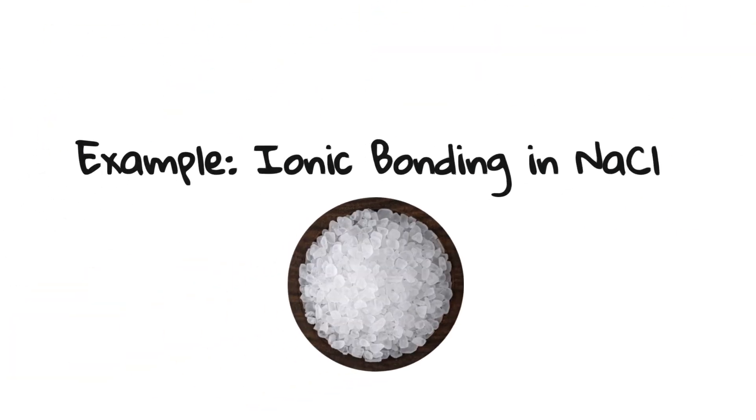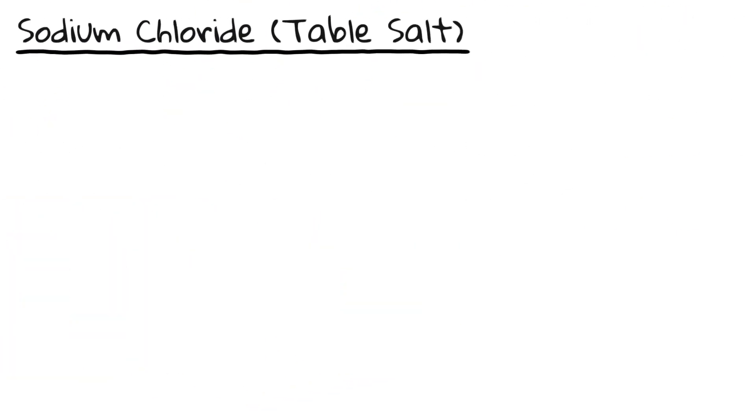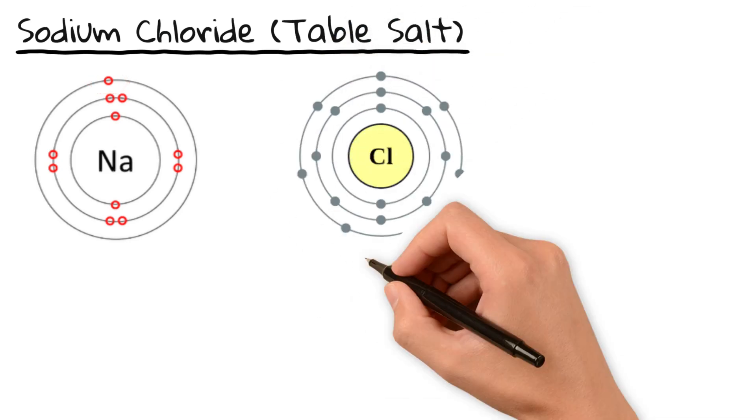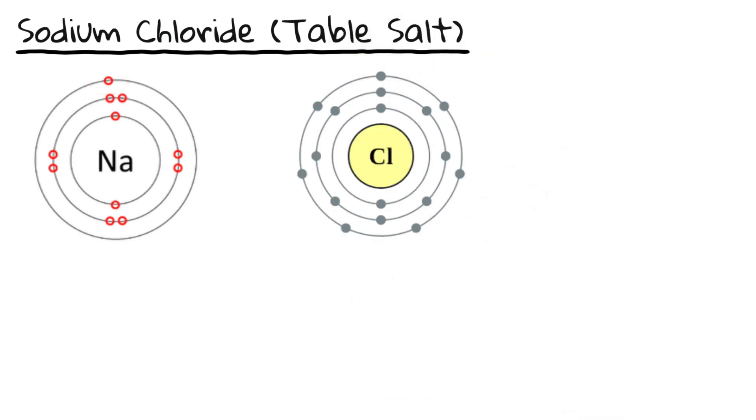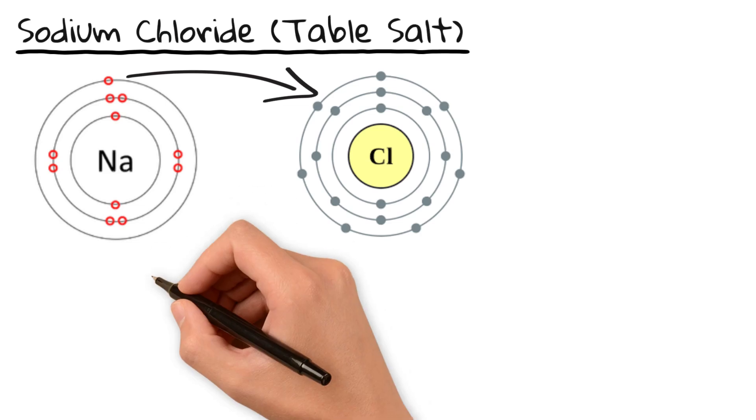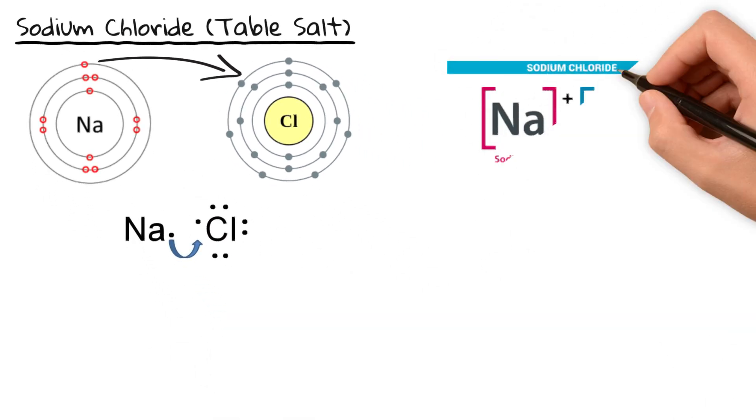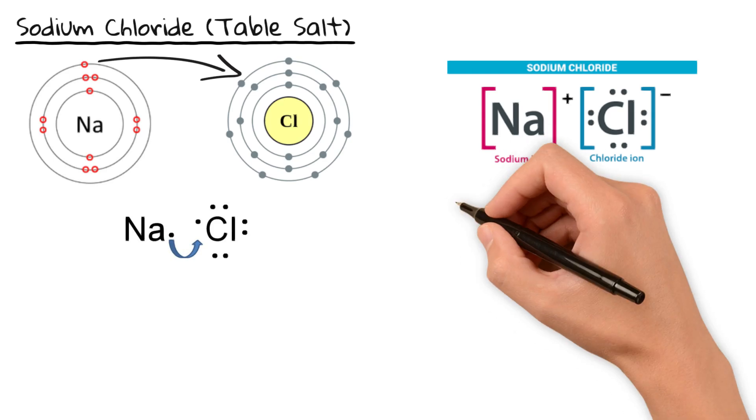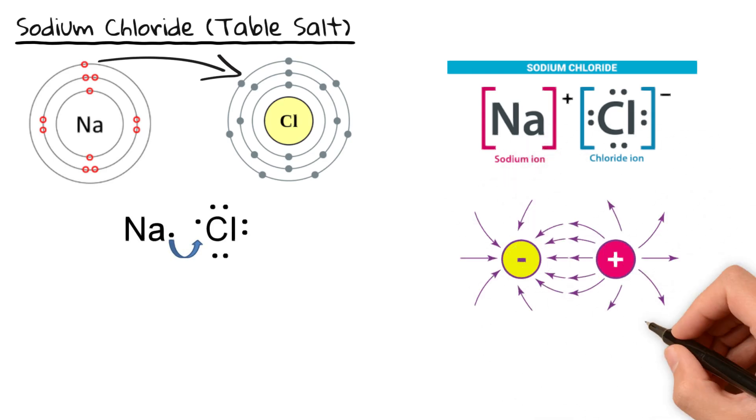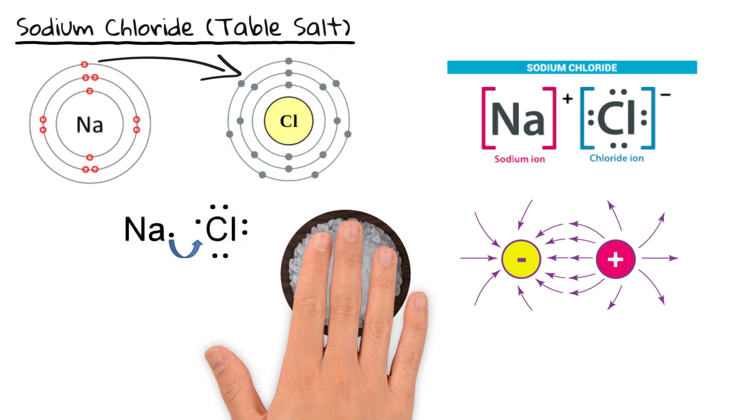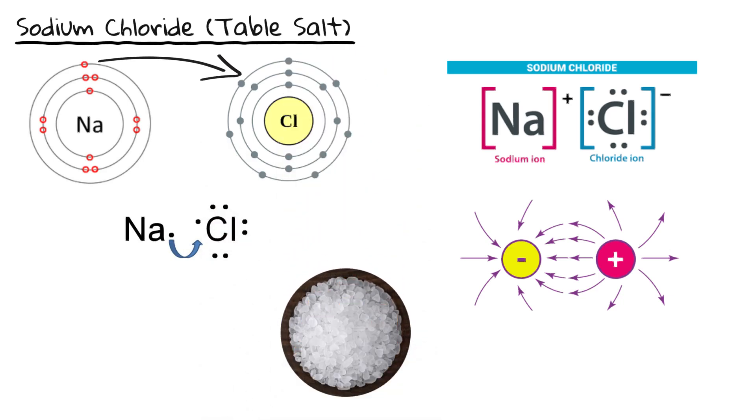Let's take a look at a real world example, table salt. Sodium is a metal with one electron in its outer shell. Chlorine is a non-metal with seven electrons. Sodium loses its one electron forming an Na+ ion and chlorine gains that electron forming a Cl- ion. The Na+ and Cl- ions attract, forming an ionic bond. And just like that you have sodium chloride or table salt.